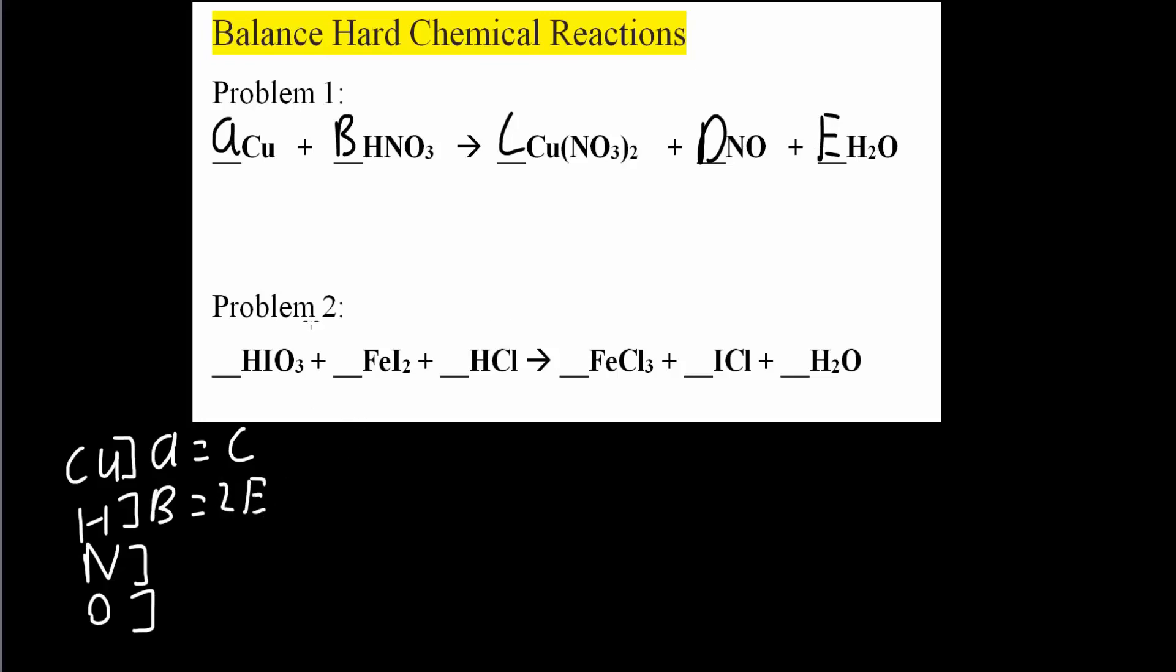Now we do N. Where do we have N for the reactants? We have it here for the B term. So B is equal to. Where do we have N here? We have two for C. So we call it two C plus we have an N here also. So plus D.